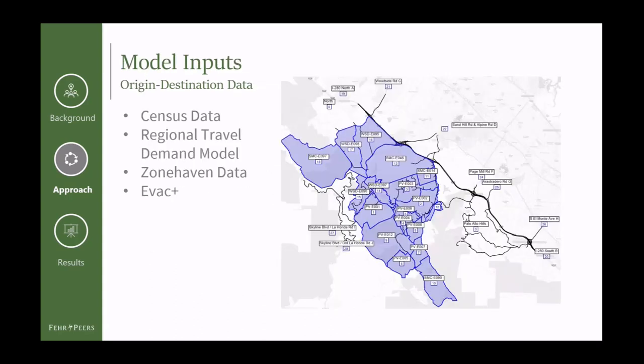We got our origin-destination data from several sources: census data, the regional travel demand model, and Zone Haven data. We compared these demand data sources to identify which had the most reliable data for each population group. We then used our Evac Plus tool to further refine the demand for our evacuation scenarios. Zone Haven is a subscription service that many California counties subscribe to — it provides shared maps and databases for first responders to communicate with residents about conditions, manage evacuations, and communicate safe post-disaster return. We also got local data for background trips on the freeway.